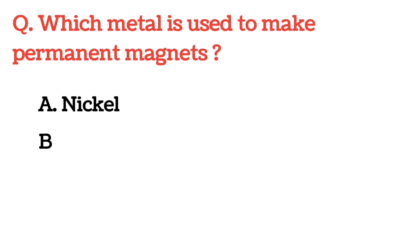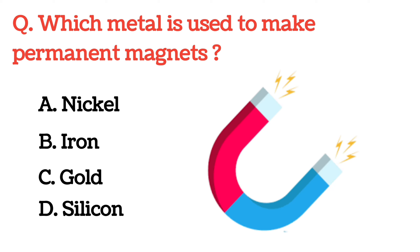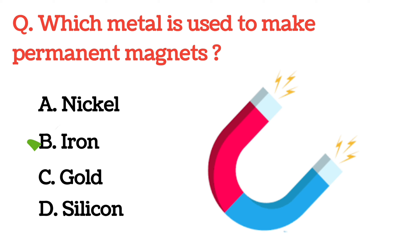Which metal is used to make permanent magnets? The correct answer is Option B: Iron.